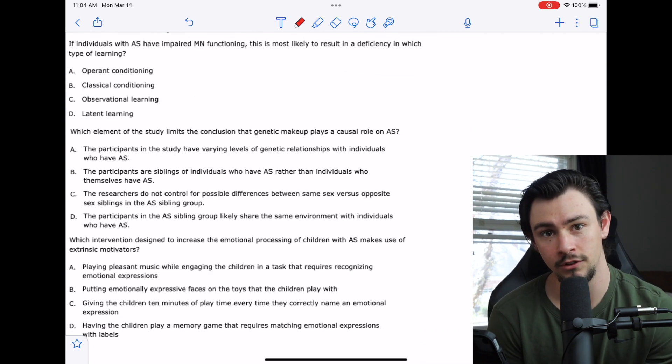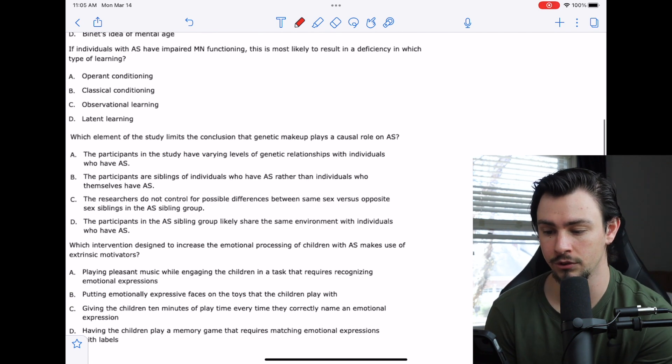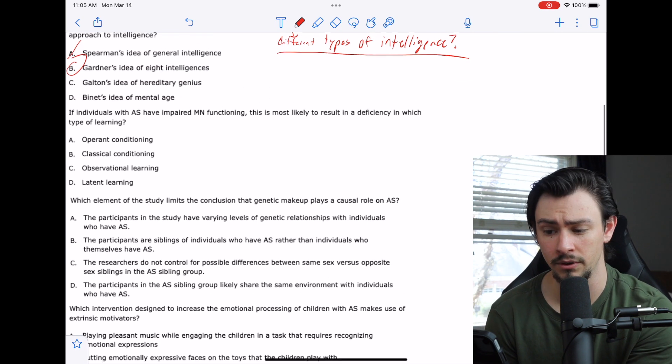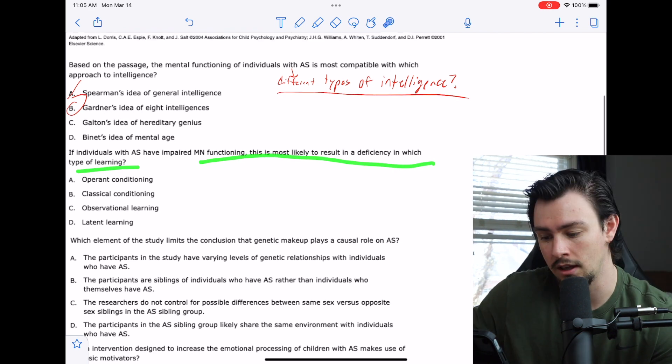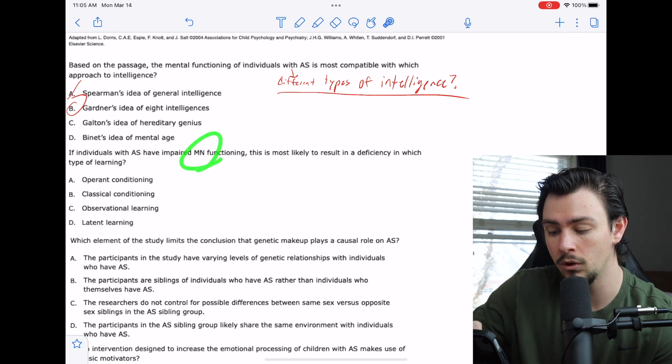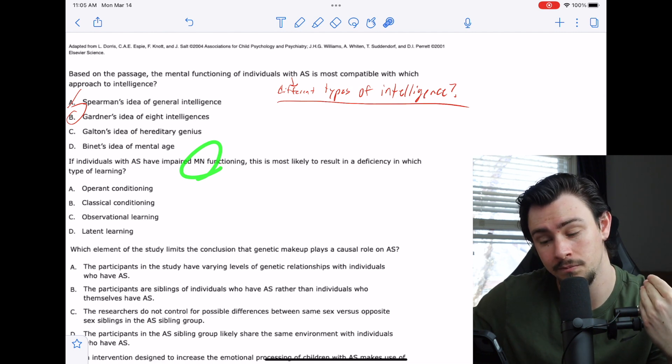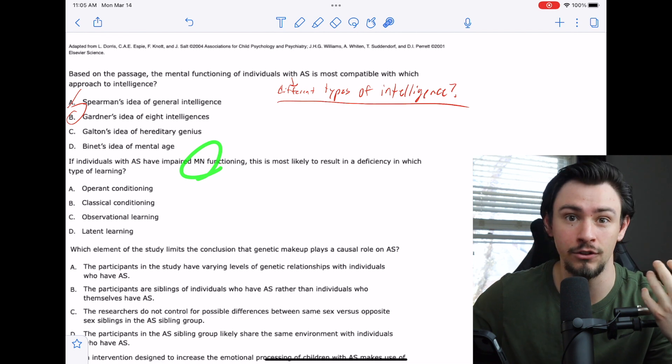Number 18 says, if individuals with Asperger's syndrome have impaired mirror neuron functioning, this is most likely the result of a deficiency in which type of learning? What they're saying is, how do mirror neurons allow us to learn? To simplify this question even further, you need to ask yourself and boil down what mirror neurons actually do. I watch you eat cereal, my mirror neurons fire. Now I know how to eat cereal. What type of learning is watching somebody else perform a task so that I can now learn to do the task?